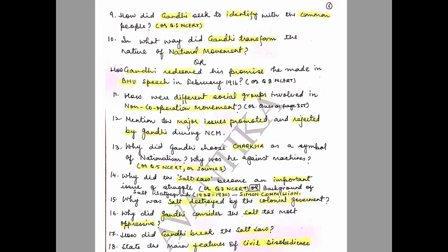Question 12: Mention the major issues promoted and rejected by Gandhi during the Non-Cooperation Movement. Question 13: Why did Gandhi choose the Charkha as a symbol of nationalism? Why was he against machines? Or question 5, NCRT source 1 — all three are the same.